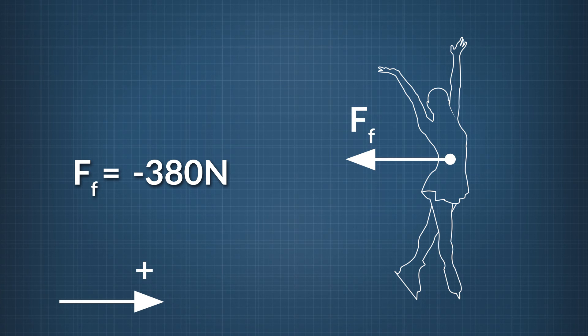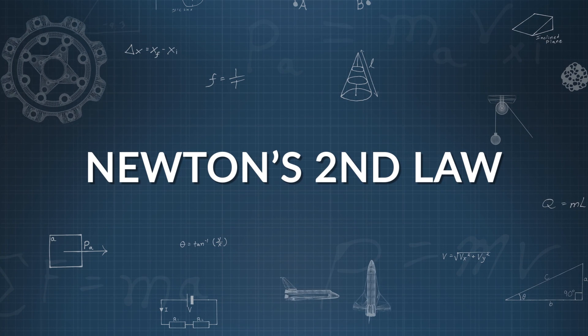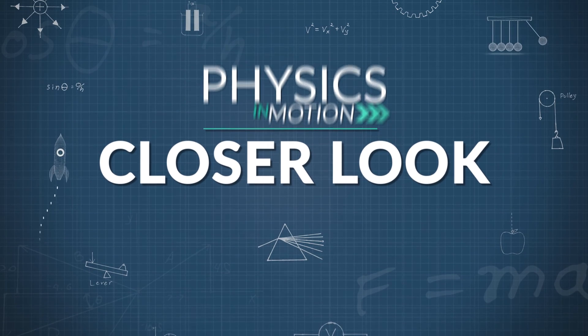This number is negative because the force due to friction acts opposite the positive direction we have given to the right in this problem. That's our closer look at Newton's second law. For more physics in motion, go to our homepage, where the entire series is available to you.